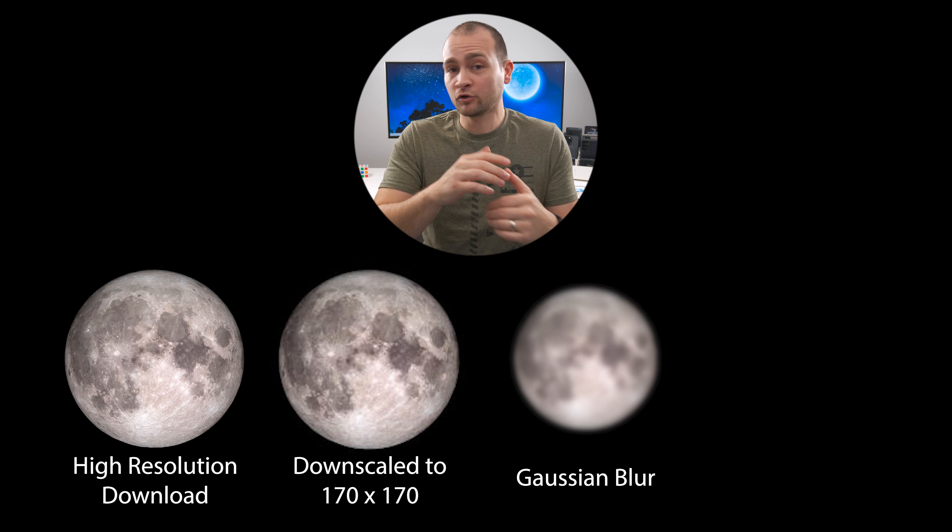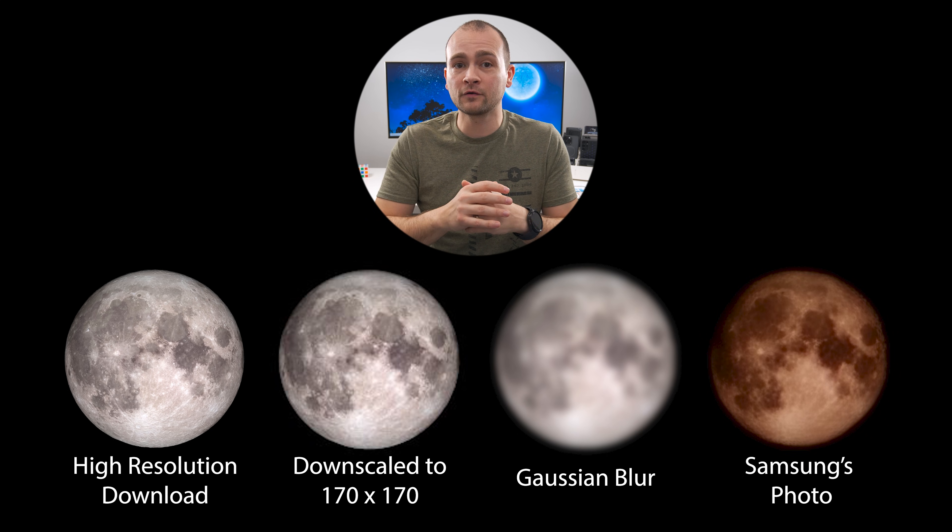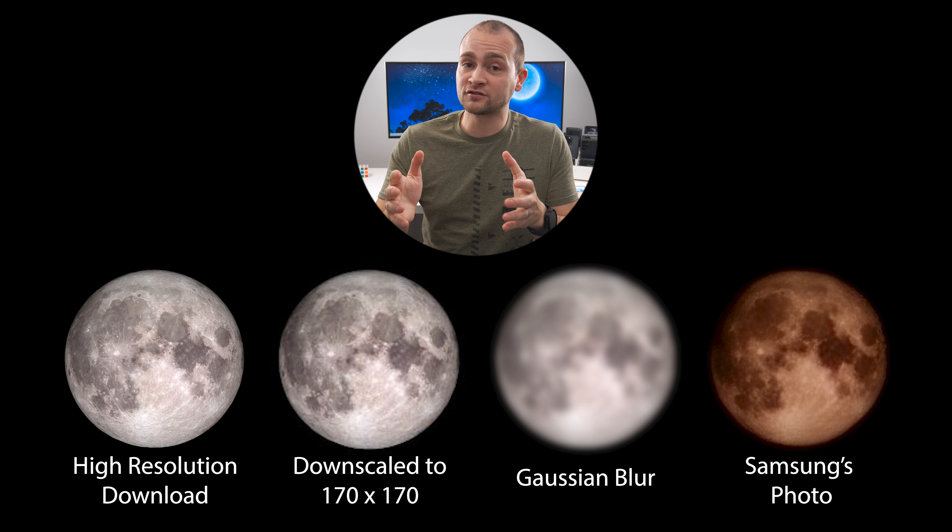So the short version of this faking images issue is that a Reddit user took a picture of the moon, downscaled it considerably, blurred that image, then took a picture of that image with their Samsung phone and got a very detailed picture of the moon as a result. Because of this, Samsung is being accused by many people of either faking their moon photos by just replacing them with other images of the moon, or Samsung's artificial intelligence is simply cheating and creating detail out of nothing based on other images of the moon.